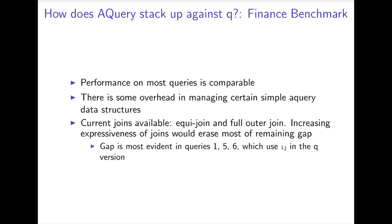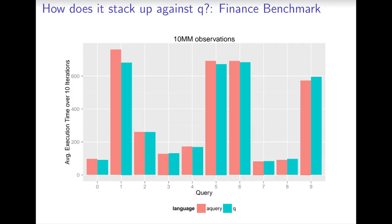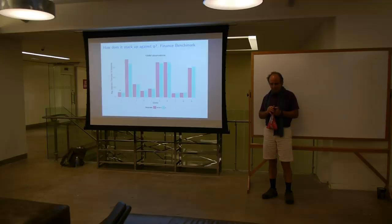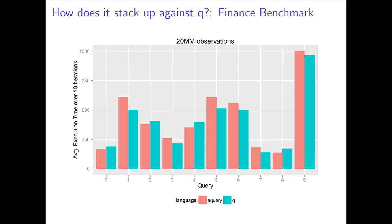How does A query stack up against Q itself? Because that's the big question — are you ever going to use something that doesn't perform well? The performance is actually very good. Again, we have A query in red and Q in blue. Handwritten Q is slightly faster sometimes, but basically it's not much faster. And it's only faster partly because Jose is such a good Q programmer. So if somebody is not such a good Q programmer, it'll probably be slower. The results stay the same as we make the number of observations bigger.